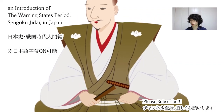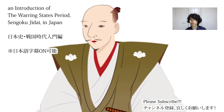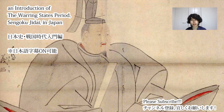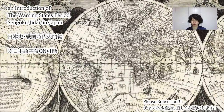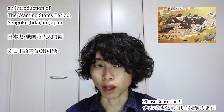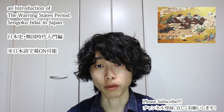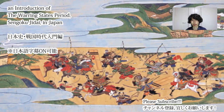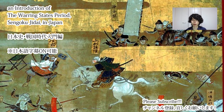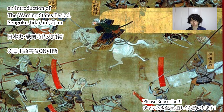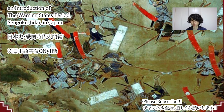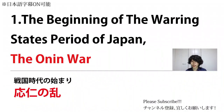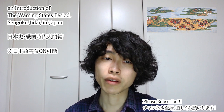The Warring States period ended when Oda Nobunaga, one of the feudal warlords, expelled the 15th shogun Ashikaga Yoshiaki from Kyoto in 1573, around the time European powers including Spain and Portugal were promoting colonial rule across the world. However, the decline of the Ashikaga shogunate had already begun with the Onin War in 1467, after which many daimyo — feudal warlords — began fighting each other. So the Muromachi period and the Warring States period partially overlap.